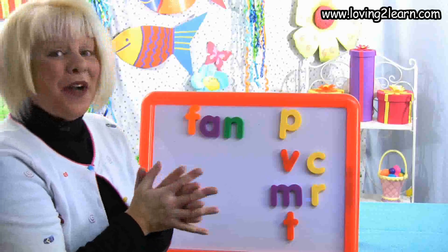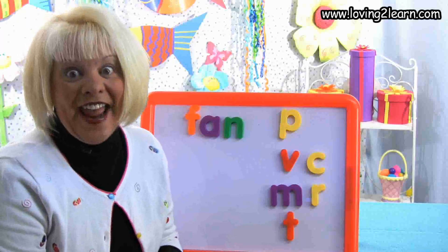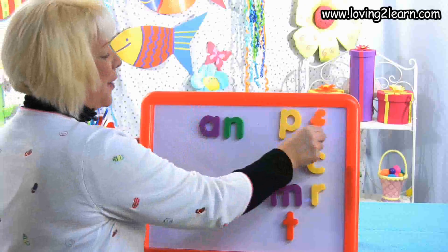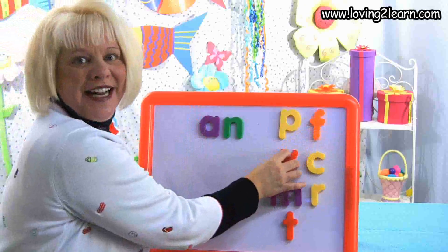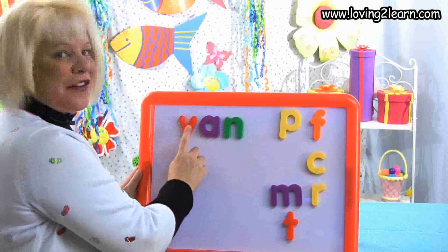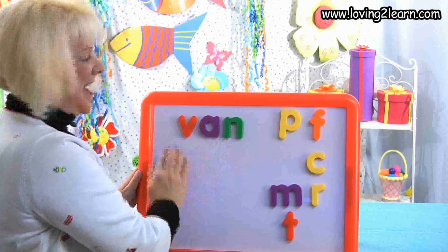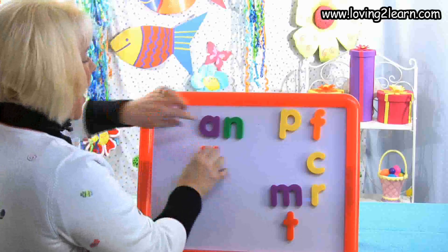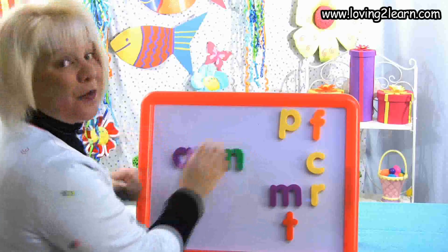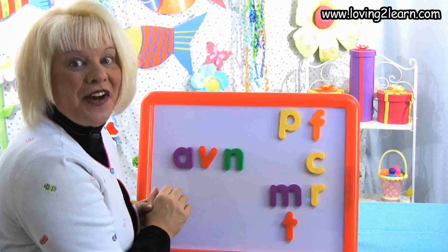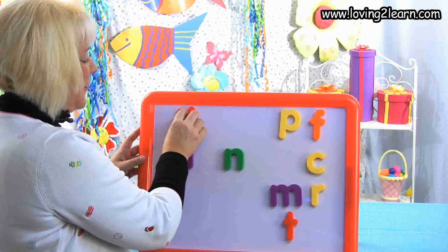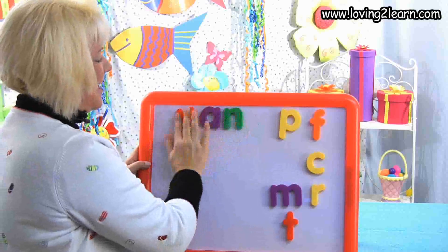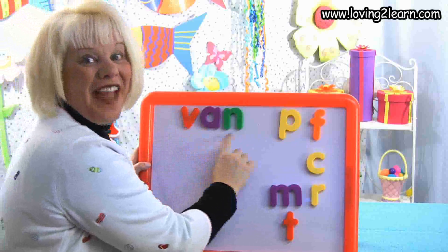I want to make the word van. What letter will I need? V. I put it at the beginning of the word: V-A-N. And there's the chunk AN. I'm mixing up the word — help me put it back together. V-V-V, there's that V. V-A-N, V-A-N. There's the word van.